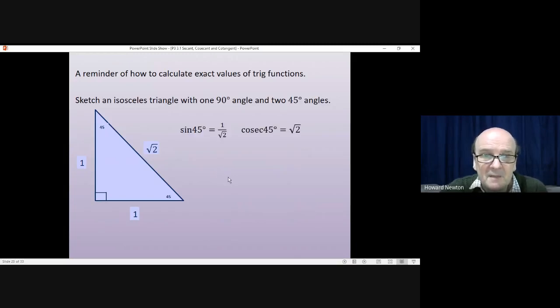Sine of 45 is opposite over hypotenuse, which is 1 over root 2. Cosec will be 1 divided by that. So cosec of 45 degrees is root 2.